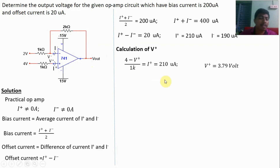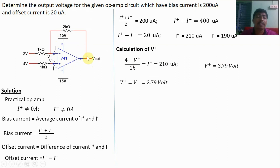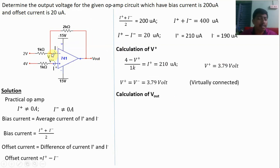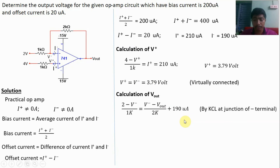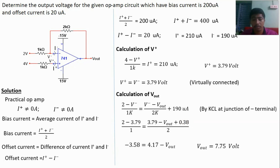The second step: V plus equals V minus because of the feedback circuit — virtually connected — so V plus = V minus = 3.79 volts. The final step is to calculate V out by applying KCL at the minus terminal. The incoming current is (2 − V minus) / 1K and outgoing currents are (V minus − V out) / 2K plus I minus = 190 micro ampere. Substituting V minus and simplifying, we get V out approximately 7.something volts.